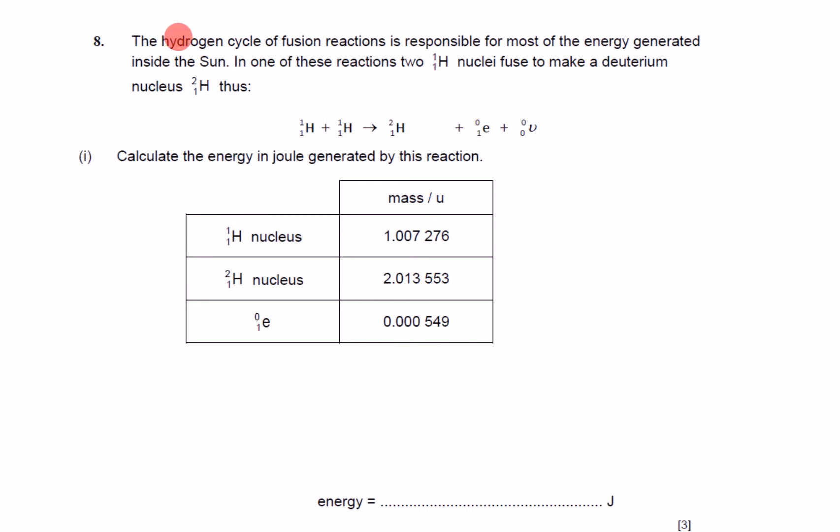Question 8 then. The hydrogen cycle of fusion reactions is responsible for most of the energy generated inside the Sun. In one of these reactions, two proton nuclei fuse to make a deuterium nucleus, hydrogen-2. Thus, hydrogen-1 plus hydrogen-1 leads to hydrogen-2, and because of what we're doing there, we will also get out a positron plus an anti-electron neutrino.